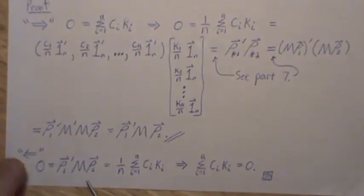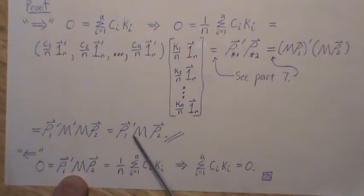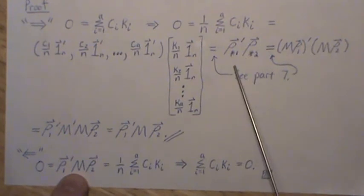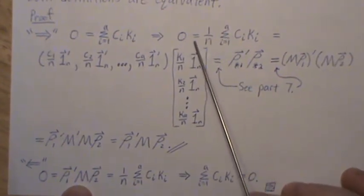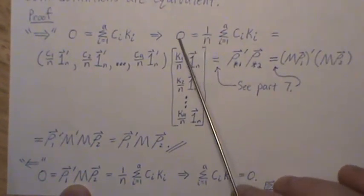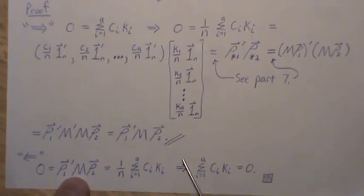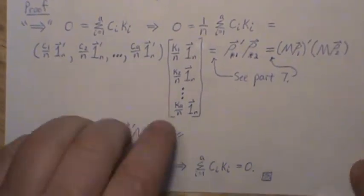To go the other way, we assume rho one prime M rho two is zero. We can trace back through the equalities: this equals that, which equals this, which equals the scalar sum. If the matrix form is zero then the scalar sum must be zero. Theorem one is proved.